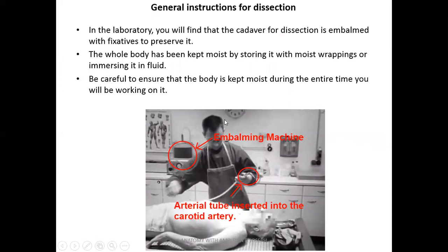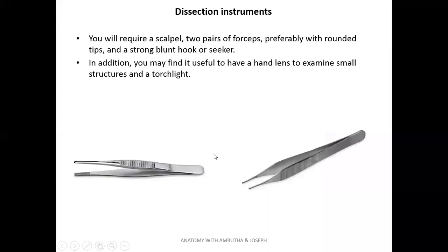Regarding general instructions for dissection: usually we have a cadaver in the dissection hall, which is immersed in a tank filled with formalin. You should ensure the body is kept moist at all times and not allowed to dry, otherwise the structures will become indistinguishable. Embalming is a procedure where formalin and other chemicals are injected into the arterial system of the deceased. Dissection instruments include the scalpel, and various types of forceps — blunt forceps, pointed forceps, artery forceps used to hold structures, and tooth forceps. Scissors are also very useful in dissection.